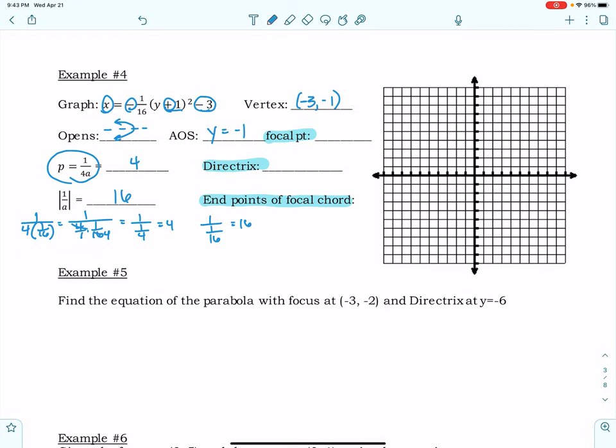We'll start with our vertex again. Negative 3, negative 1. There's my vertex. And this time since the parabola is opening left, I know that I'm going to have the focus to the left of this by 4. There's the focus. And the directrix will be 4 to the right. So there's the directrix right there. That's going to be x equals 1.